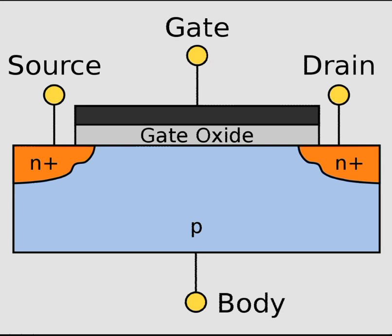That is why it is called a field effect transistor — the input electric field controls the current in this device. Looking at the structure: there is a P-type semiconductor material which forms the body of the FET, and within this P-type body there are two n-plus doped regions containing plenty of electrons.